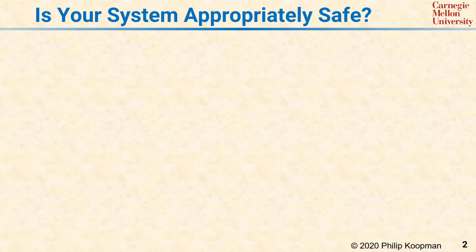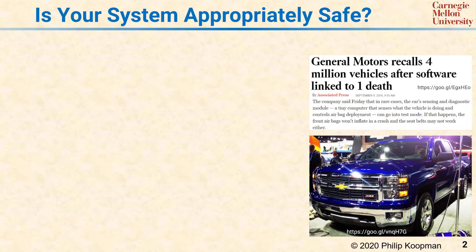Every embedded system needs to be appropriately safe for its intended application. The issues that arise in software safety can often be quite subtle but deadly nonetheless. As an example, in September 2016, General Motors had to recall 4 million vehicles because of a software defect that caused a fatality in a 2014 Chevy Silverado truck. The defect involves the airbag unit going into test mode during vehicle operation.